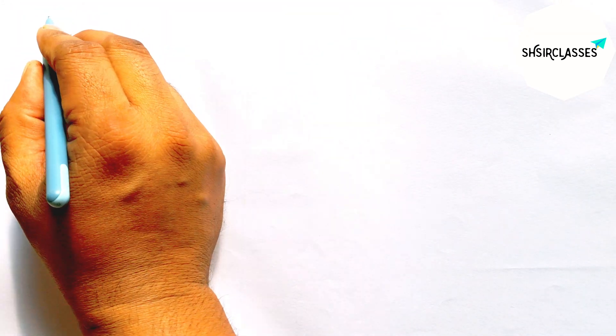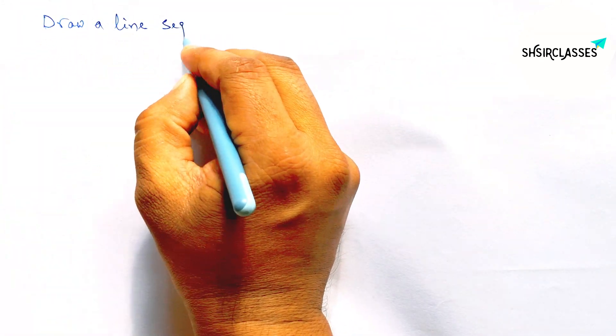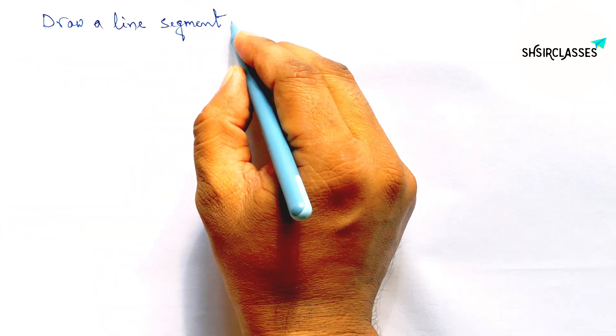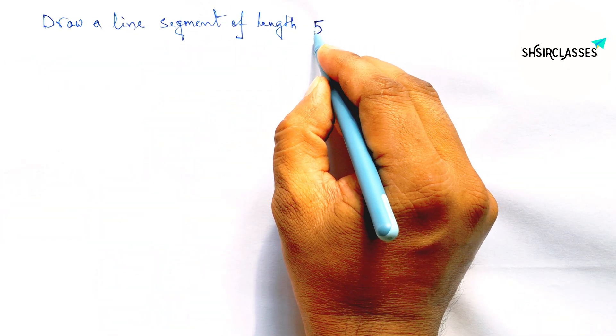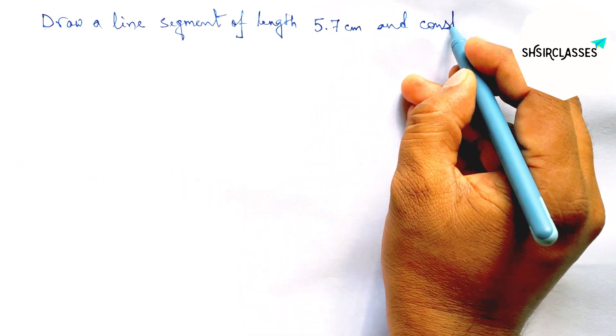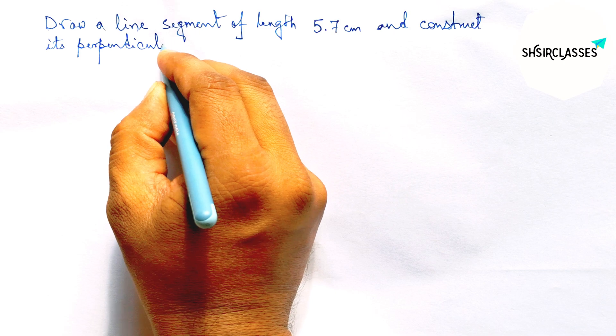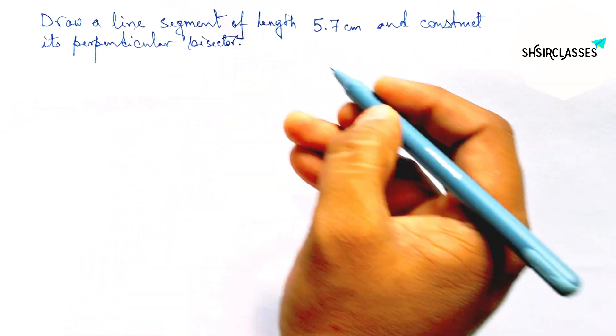Hi everyone, welcome to Cesar Classes. Today in this video, draw a line segment of length 5.7 centimeter and construct its perpendicular bisector to the given line in easy way. So please watch the video till the end. So let's start the video.